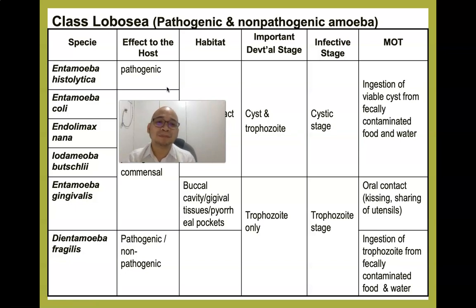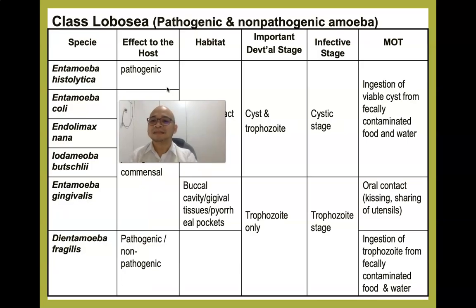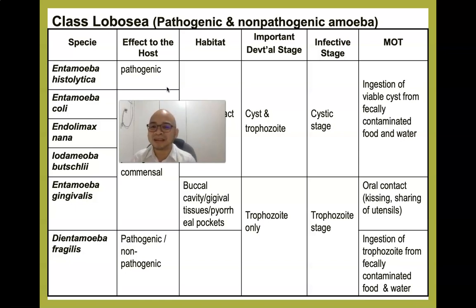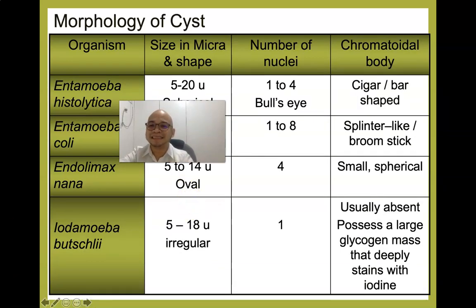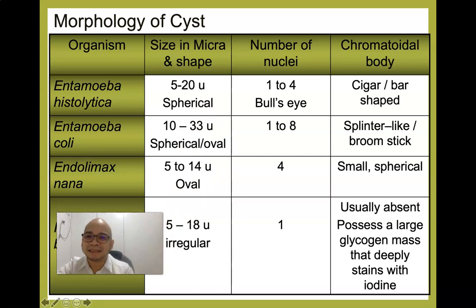The mode of transmission for Entamoeba histolytica, E. coli, Endolimax nana, and Iodamoeba butschlii is ingestion of viable cysts from fecally contaminated food and water. For Entamoeba gingivalis, transmission is through oral contact such as kissing or sharing utensils. For Dientamoeba fragilis, it is through ingestion of trophozoites from fecally contaminated food and water. Some literature reclassifies Dientamoeba fragilis into Mastigophora.